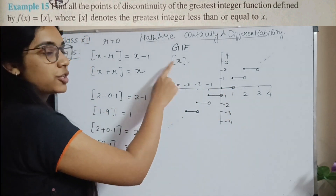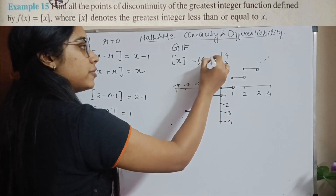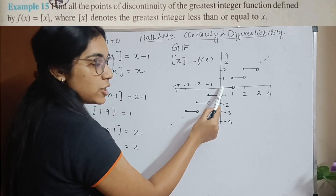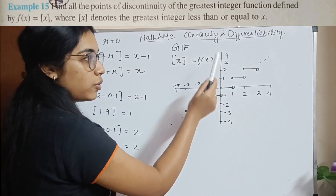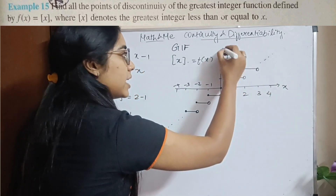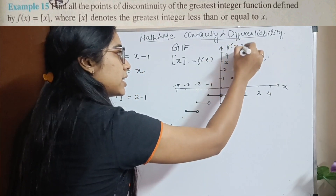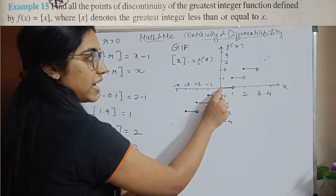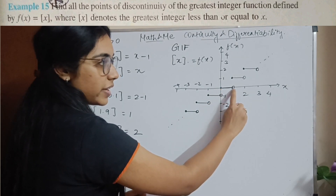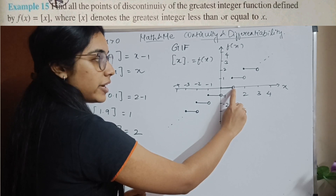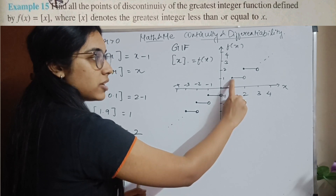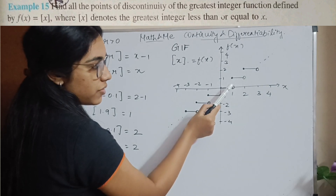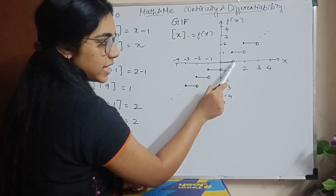The Greatest Integer Function looks like this — this is my f of x. When the value of x is equal to 0, I have the value on the y-axis, and f of x is 0. When my value of x is 1, the value jumps — it jumps from here to here.